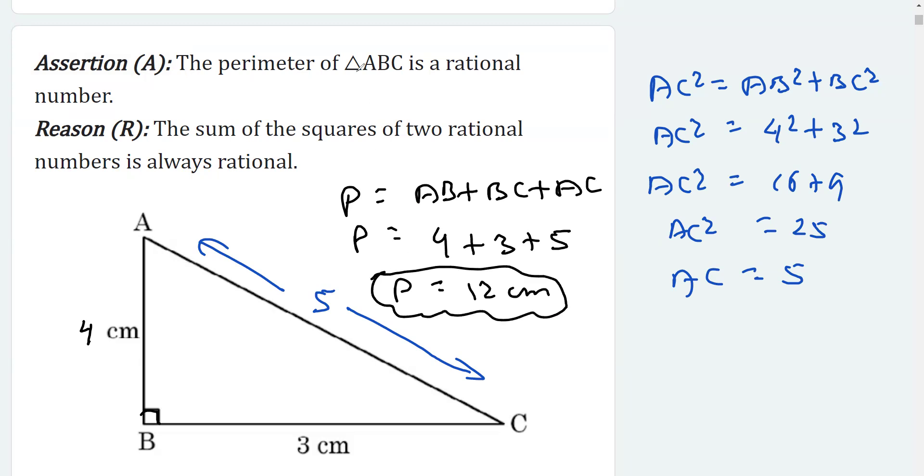The assertion said that the perimeter is a rational number. The perimeter we got is 12, and 12 is a rational number, so we can say that the assertion is correct.